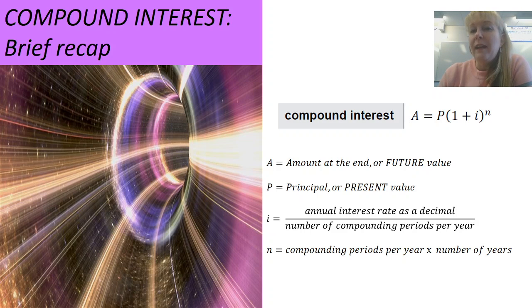And lastly, we have n, which is equal to the number of compounding periods multiplied by the number of years. That's our total number of compounding periods for the life of the investment or the loan. We're going to dig a little bit deeper in that, and you'll see how these variables are used in a moment.